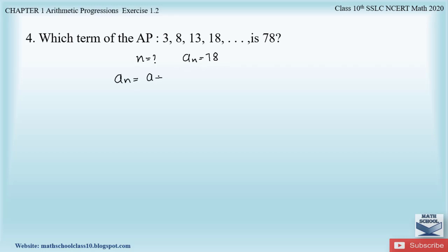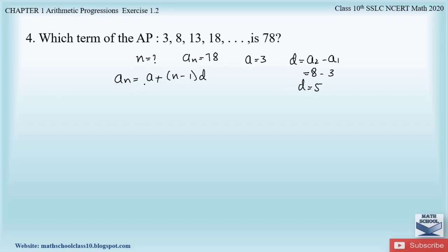We apply the nth term formula: a_n = a + (n − 1) × d. We need to find a and d from the given AP. The first term a equals 3, and d equals the second term minus the first term, that is 8 minus 3, so d equals 5.